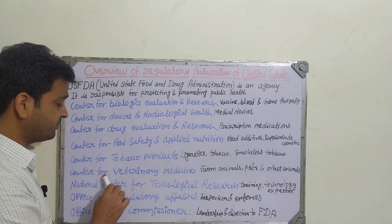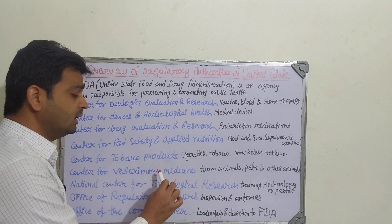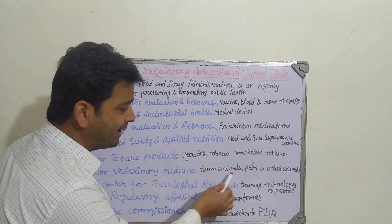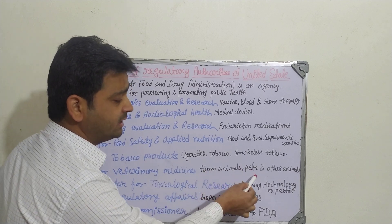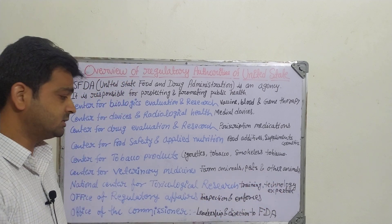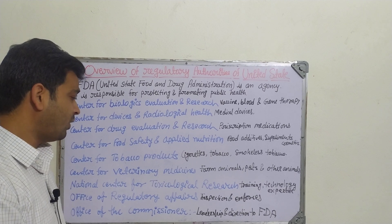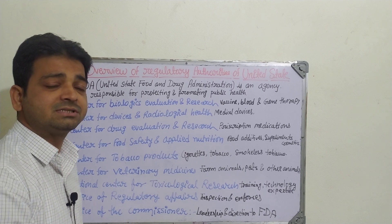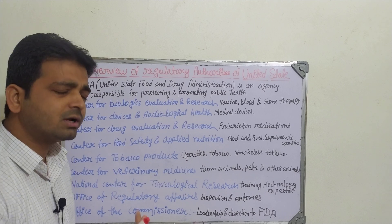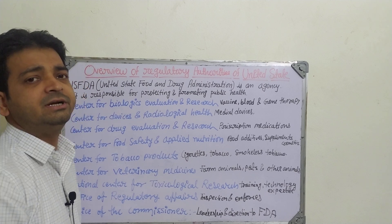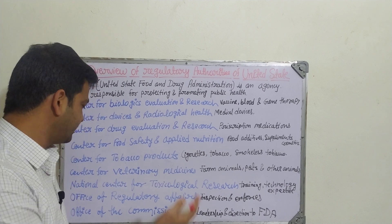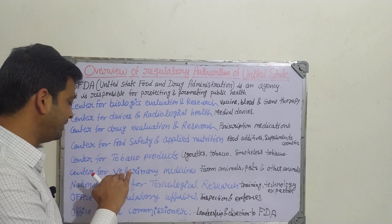The next one is the Center for Veterinary Medicines. Veterinary means animal medicines — whatever applies to farm animals, pet animals, and research animals. For them, what types of medicines, vitamins, supplements, antibiotics, anti-inflammatories, and whatever food is meant for animals — those things are regulated and controlled by this center.